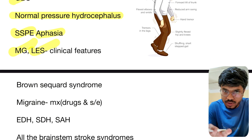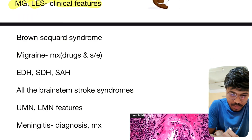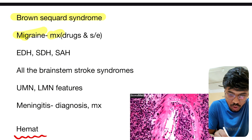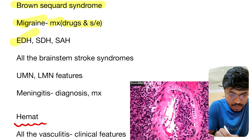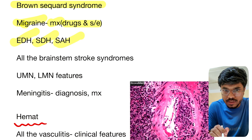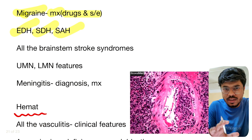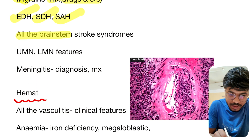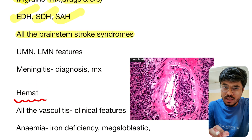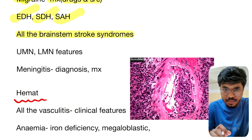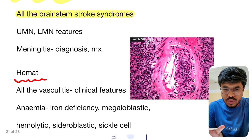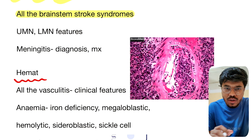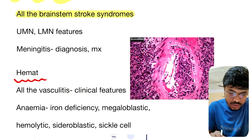Myasthenia gravis and Lambert-Eaton syndrome — the differences and clinical features. Brown-Séquard syndrome — again very very important. Migraine management — all the drugs and side effects. Extradural hemorrhage, subdural hemorrhage, and subarachnoid hemorrhage — again important; all three CT scan images are very very important. All the brainstem stroke syndromes: Wallenberg syndrome, lateral medullary syndrome, medial medullary syndrome, lateral pontine syndrome, medial pontine syndrome, and Benedict syndrome — all syndromes are important.